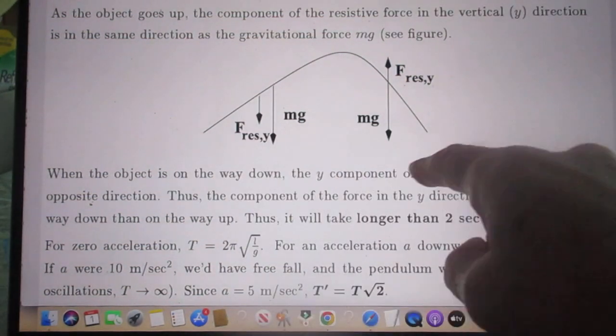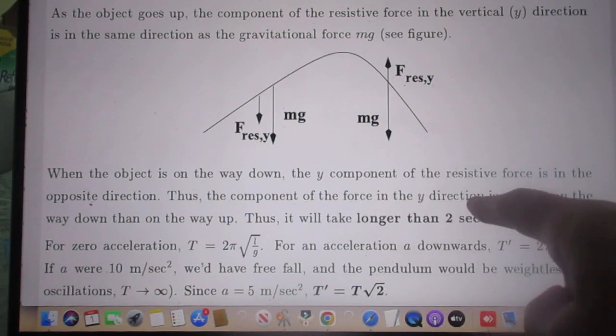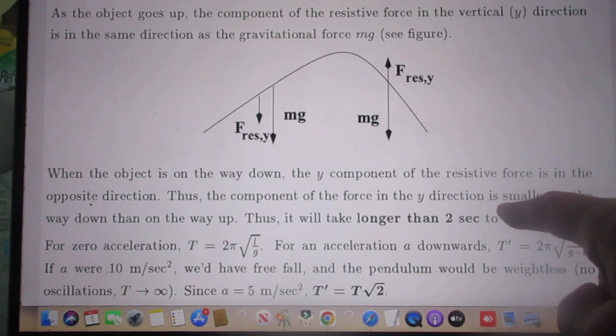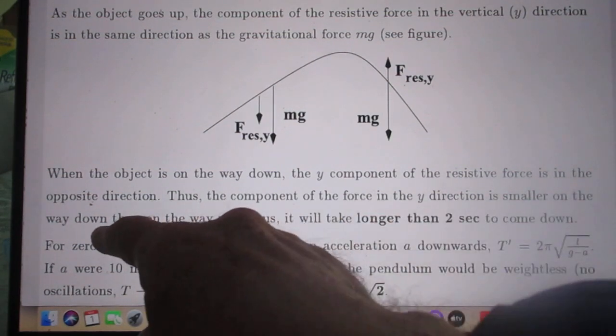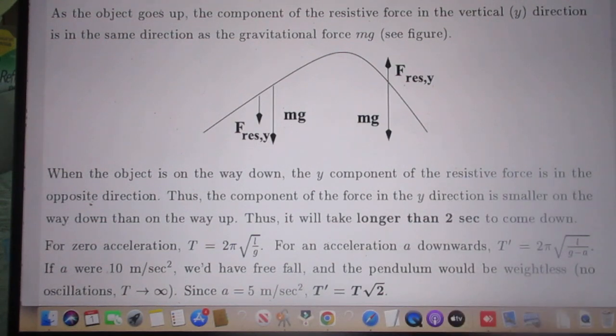When the object is on the way down, the y component of the resistive force is in the opposite direction. Thus the component of the force in the y direction is smaller on the way down than on the way up. Thus it will take longer than two seconds to come down. Next question.